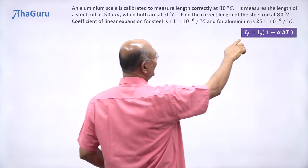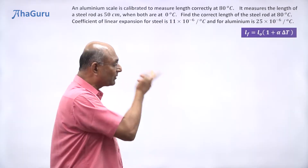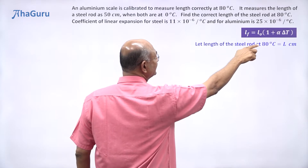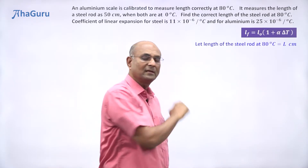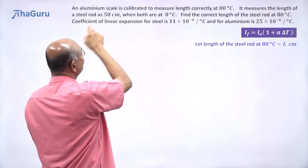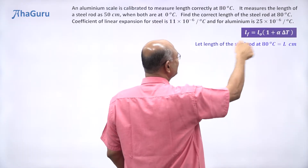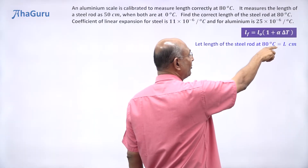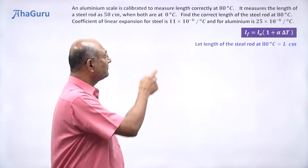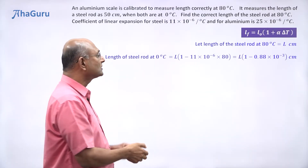So first, we know the formula: length final equals L₀, the original length, into 1 plus alpha times delta T. Let us say that the length of the steel rod at 80 degrees Celsius is L centimeters. Is that 50 centimeters? No. The aluminum scale says that the steel rod's length is 50 centimeters when both are at 0 degrees Celsius. But at 80 degrees Celsius, the steel rod will have some length — I don't know what it is; that's what we want to find out. Let us call that L centimeters.